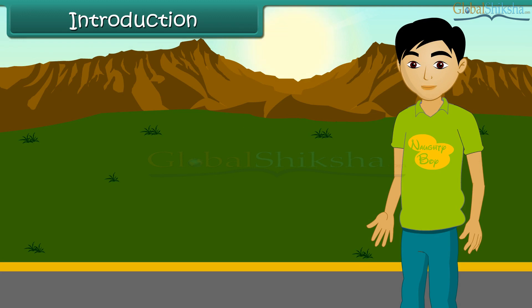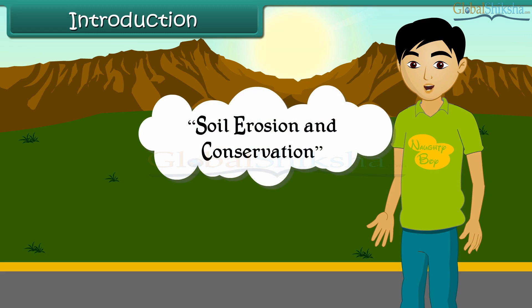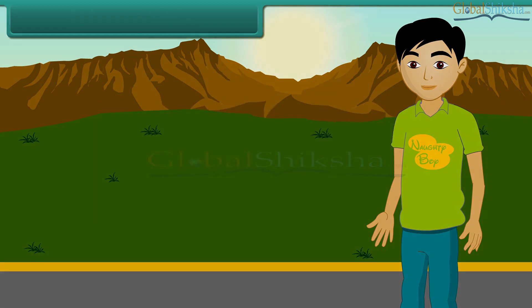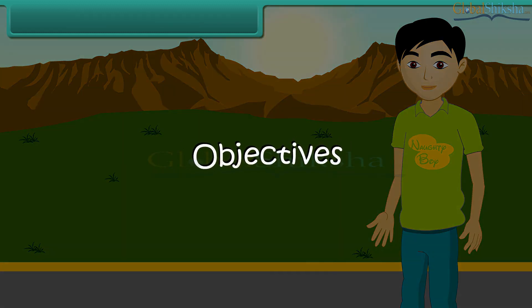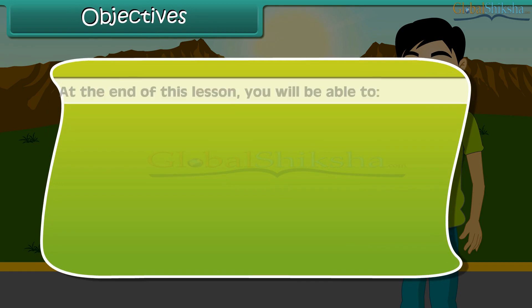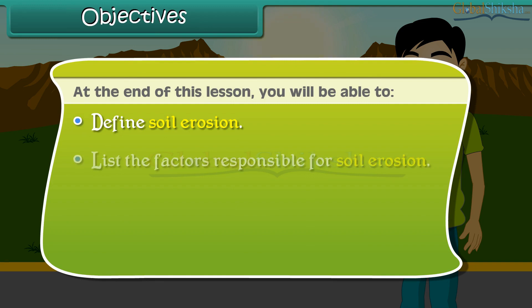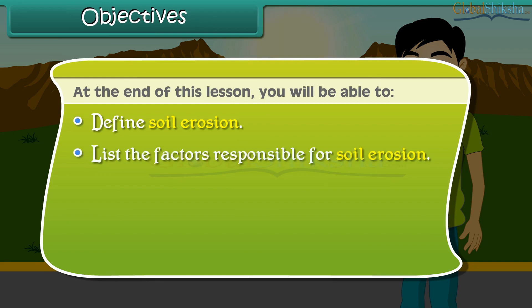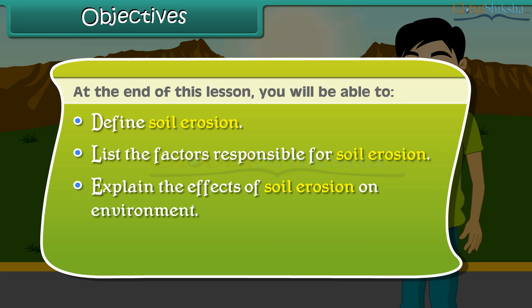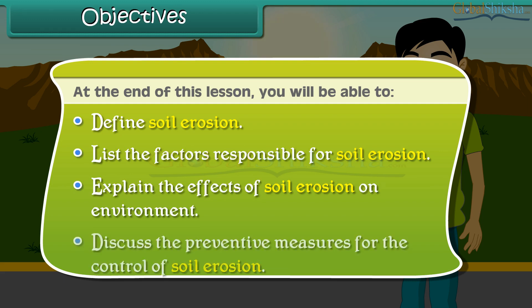In this lesson on soil erosion and conservation, the objectives are: at the end of this lesson, you'll be able to define soil erosion, list the factors responsible for soil erosion, explain the effects of soil erosion on the environment, and discuss the preventive measures for the control of soil erosion.